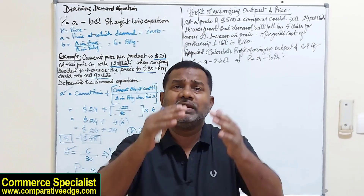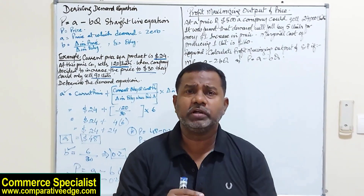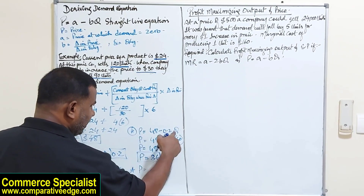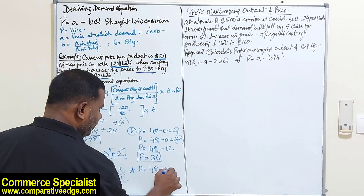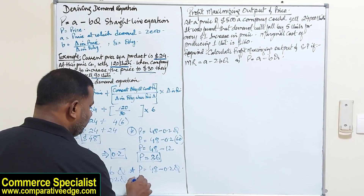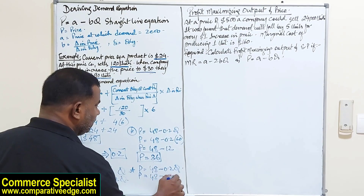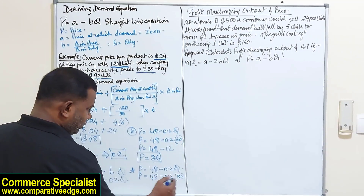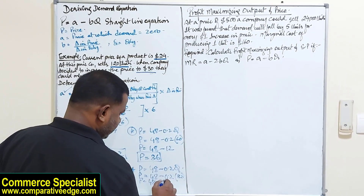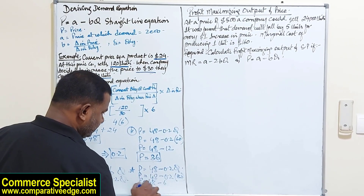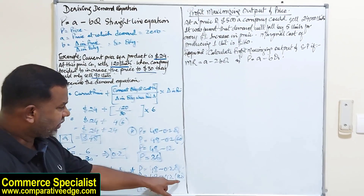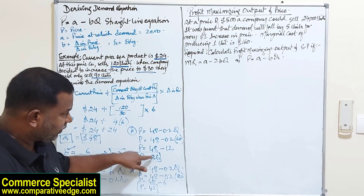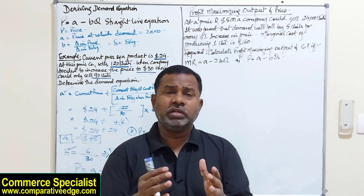If I want to sell just 30 units, what price will customers be willing to pay? P = 48 − 0.2 × 30 = 48 − 6 = 42. So at a price of $42, I will sell 30 units. But if I reduce the price from $42 to $36, people will buy 60 units. This is very much in harmony with the law of demand.